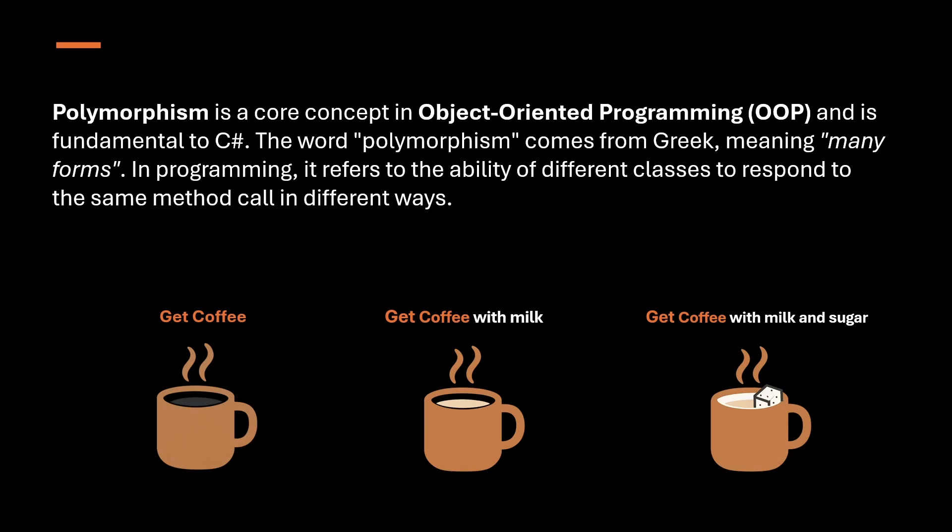Let's break it down with a simple relatable example. Imagine you're at a coffee shop. You walk up to the counter and ask for coffee — in its simplest form, you just get black coffee. But maybe today you want a little milk, so the same request becomes 'get coffee with milk.' Tomorrow, maybe you want it with both milk and sugar — still the same method, 'get coffee,' but with different parameters. This is polymorphism in action: the same method name implemented in different ways based on the parameters or the object calling it.